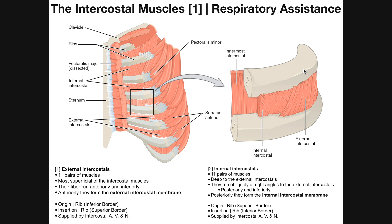Since every one of the intercostal spaces has this muscle, if the external intercostals collectively contract, all the ribs kind of move upward. So when you breathe in, the external intercostal muscles contract, and that helps expand the rib cage so that the lungs can expand more and you can pull in more air.